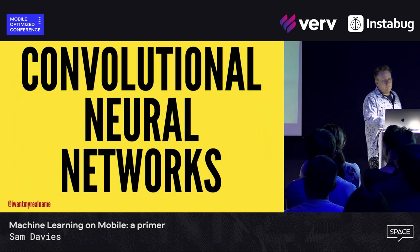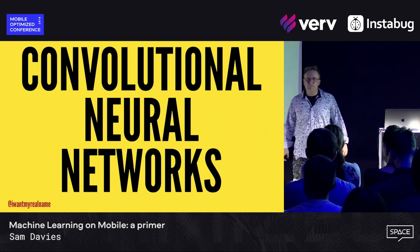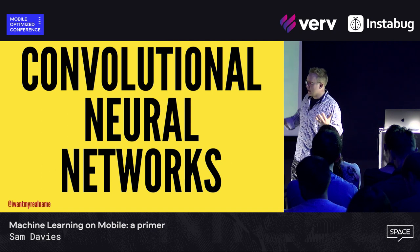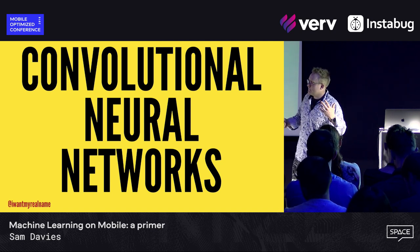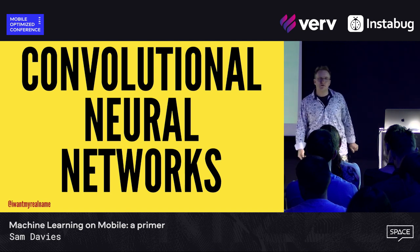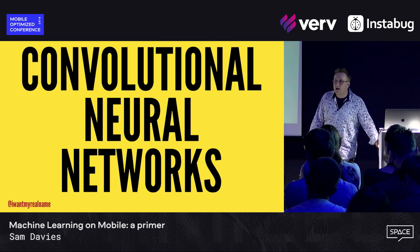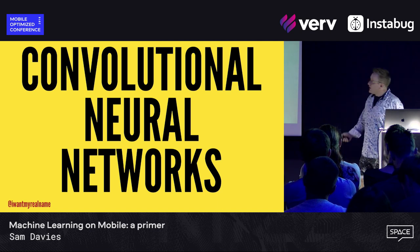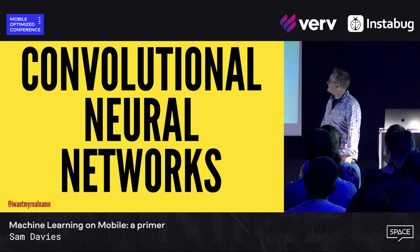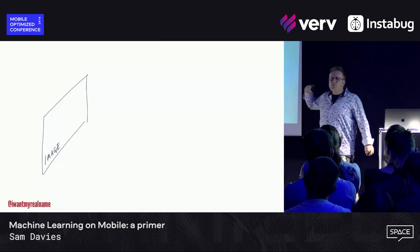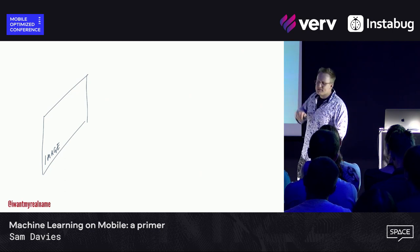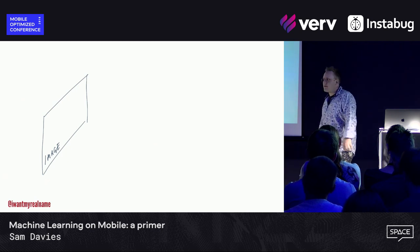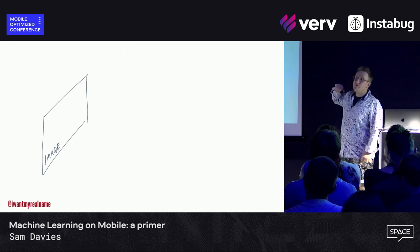That was a support vector machine classifier — quite a simple one. You can do more complex ones with more classes, but it's not generally as good as convolutional neural networks. That doesn't mean you should never use them, because there are times when things are quite easy to classify, and you should just use the simplest thing you've got.